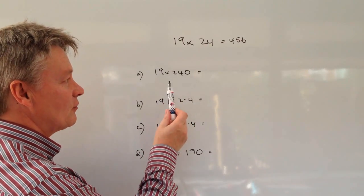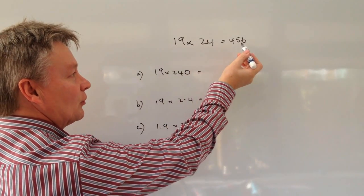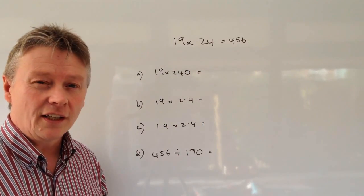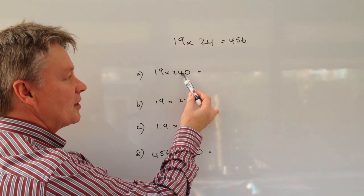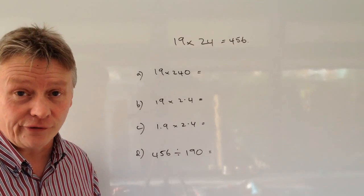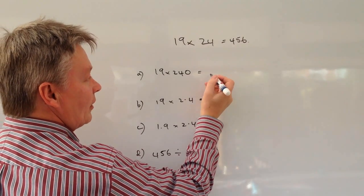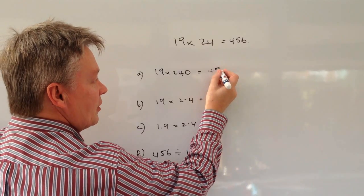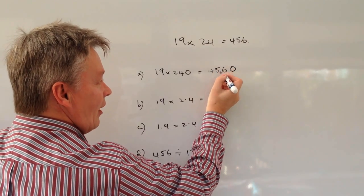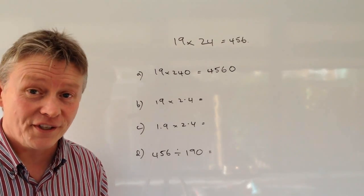The first one is relatively straightforward. If you can imagine that you have a decimal point after all of these numbers, now in effect this decimal point has moved one additional place. It's now become 240, so therefore we're going to move the decimal point one additional place over there. Because we're doing that, we have to put a zero in its place, so that becomes 4560.